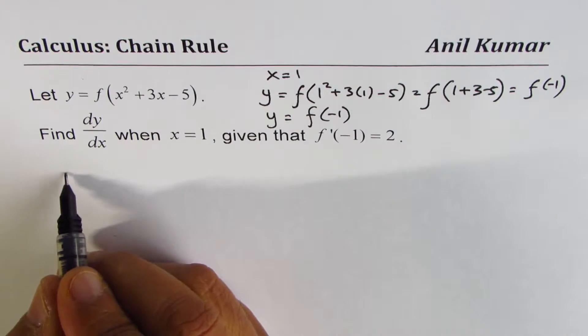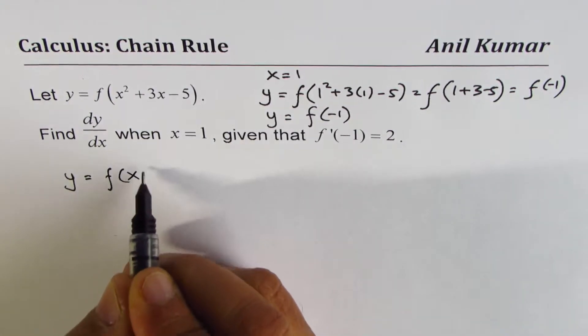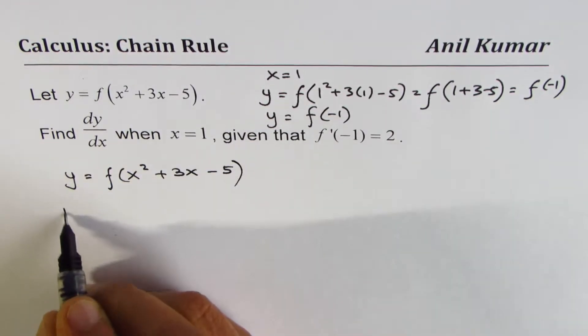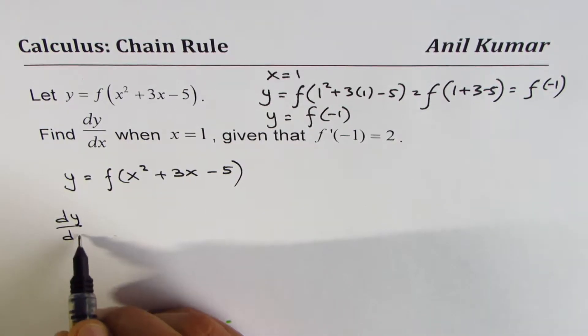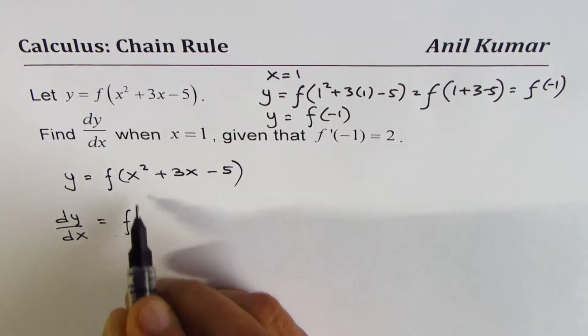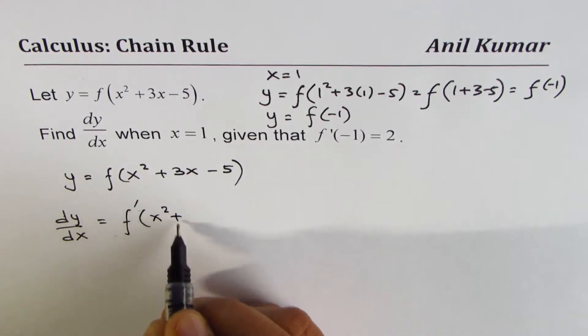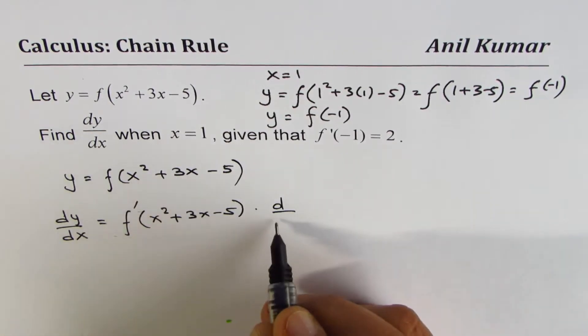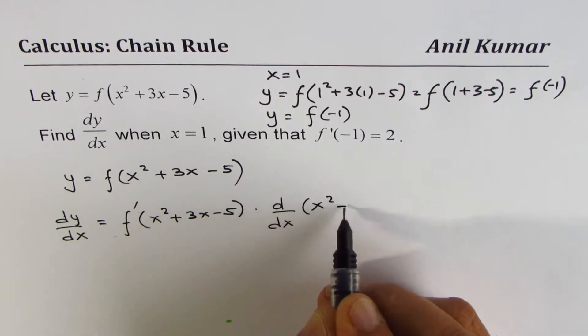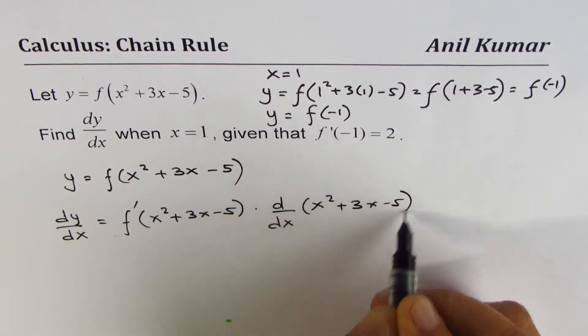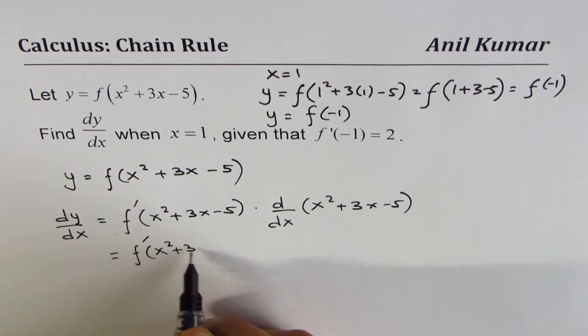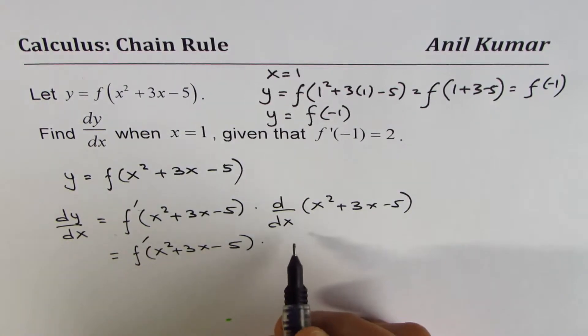So let's begin. We have y equals f of x squared plus 3x minus 5. The derivative with respect to x will be dy/dx equals f prime of x squared plus 3x minus 5 times the derivative of the inside function. That's the chain rule. We can write this as f prime of x squared plus 3x minus 5 times 2x plus 3.